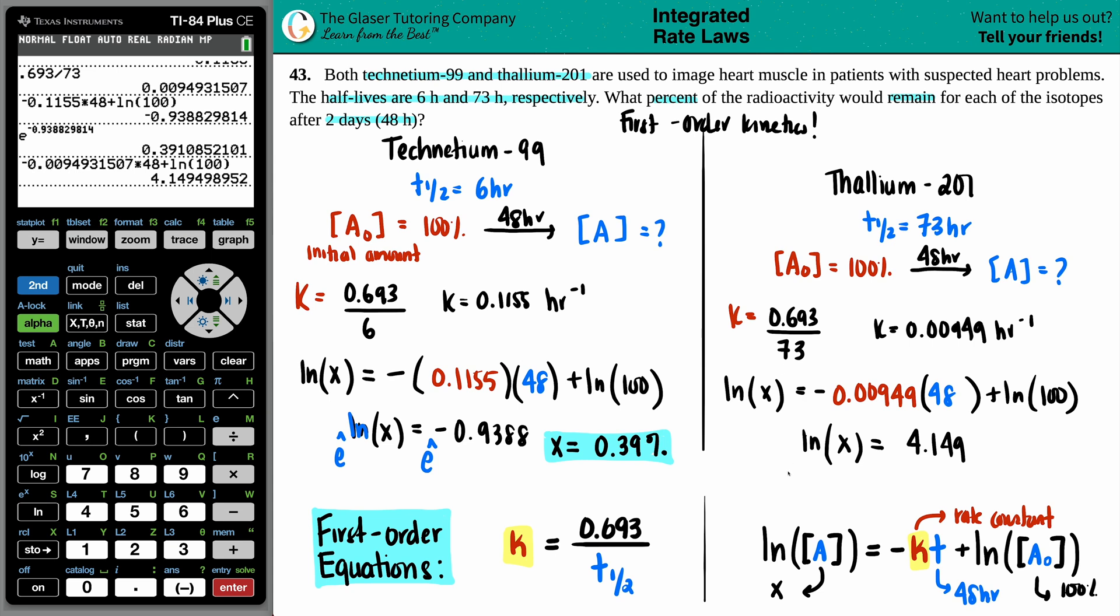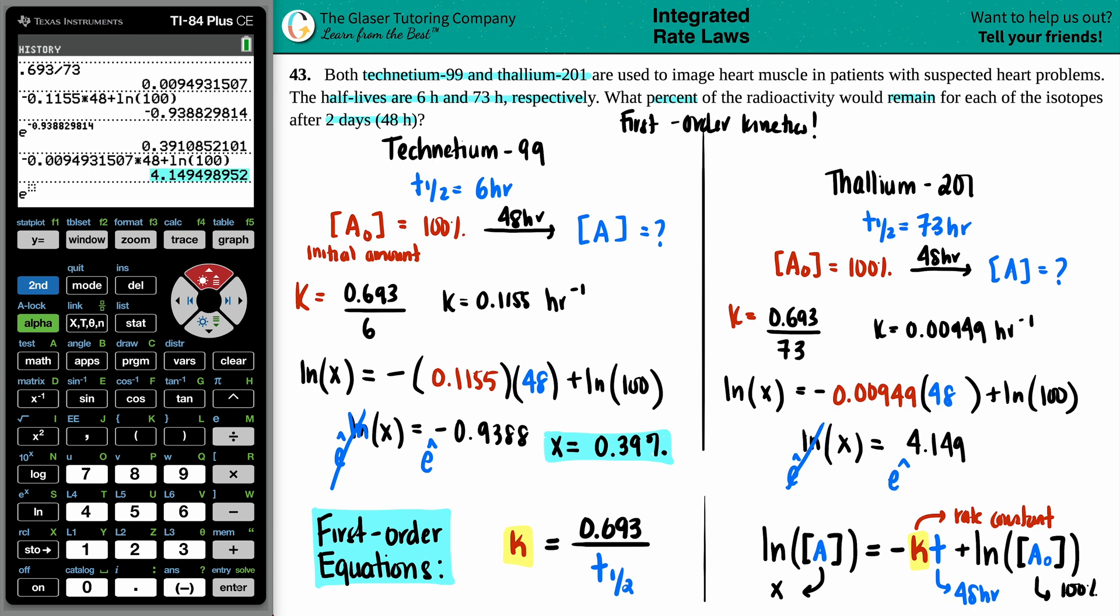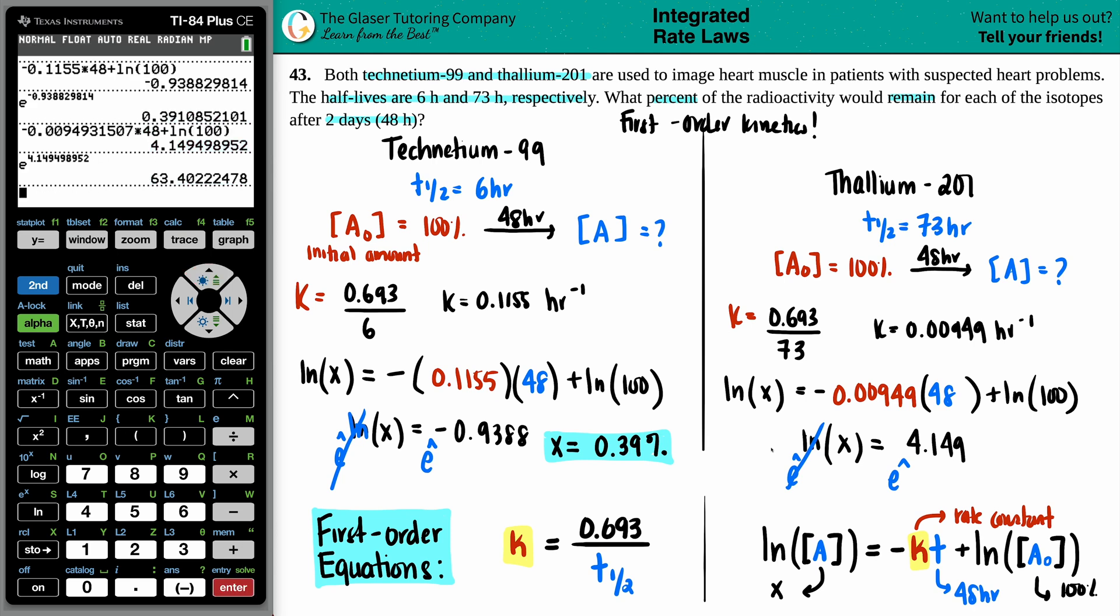And now the same thing, you want to get x by itself, so E to the power, that cancels this out, so I should have canceled that out as well. And then E to the power. So second Ln, grab that number. Whoa! Yeah, a little bit more than a half. So 63%, 63.4% of the thallium is going to be in the system after two days. Got a long way to go.